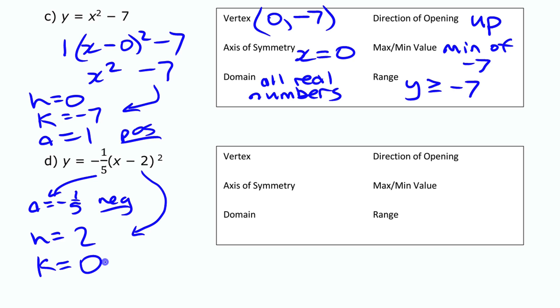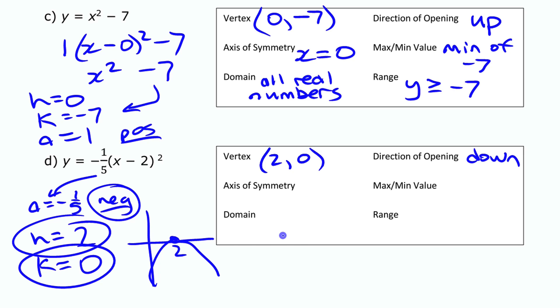If we were trying to visualize the graph there, it's been shifted 2 to the right and not up and down at all. So that vertex is on the axis there. And the fact that this is negative means it's going to be opening down from there like that. So vertex is 2, 0. Axis of symmetry right down the middle there at 2, x equals 2.